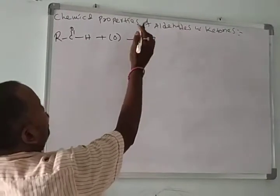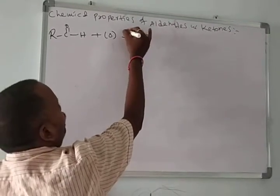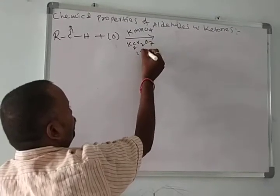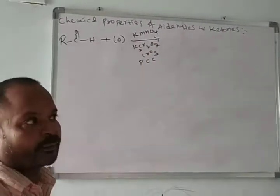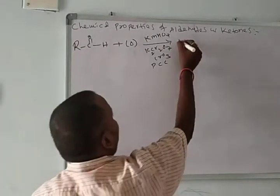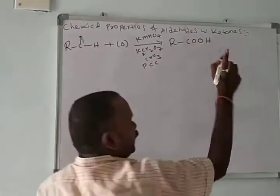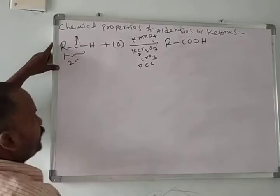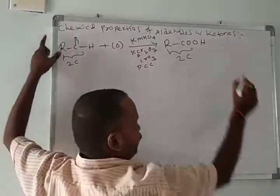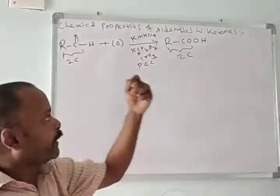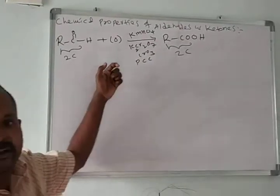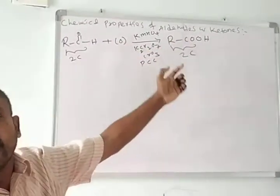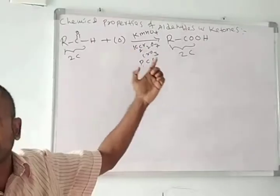For aldehydes, oxidation using KMnO₄, K₂Cr₂O₇, CrO₃, or PCC (pyridinium chlorochromate) converts them into carboxylic acid. An important point: the reactant side has the same number of carbon atoms as the product side. When aldehydes undergo oxidation, we get the same number of carbons in the resulting carboxylic acid — reactants and products have the same number of carbon atoms.